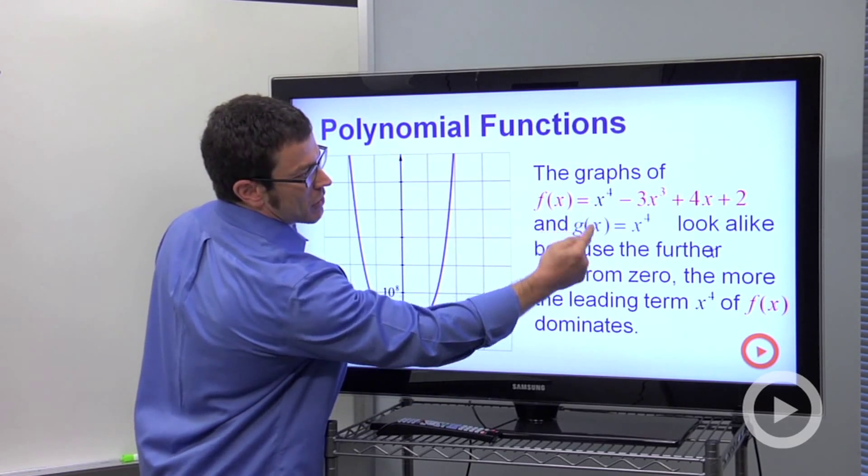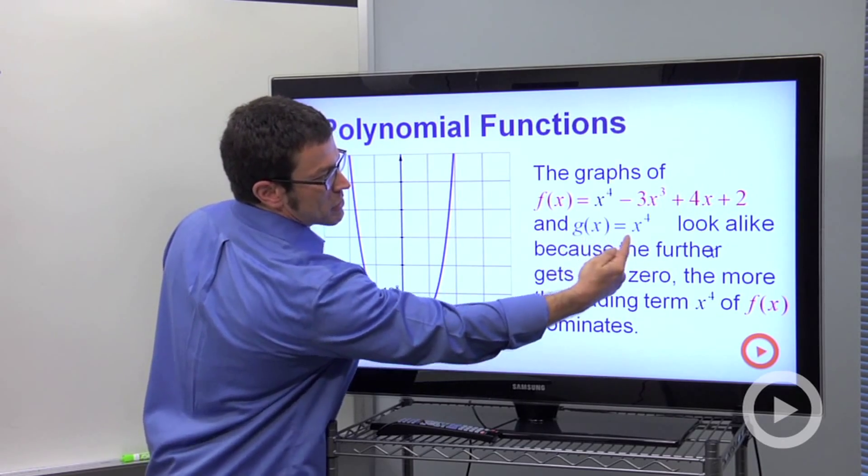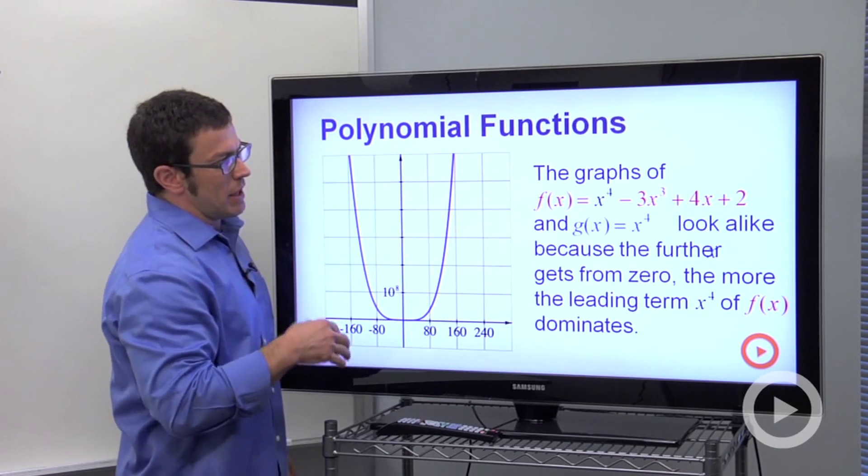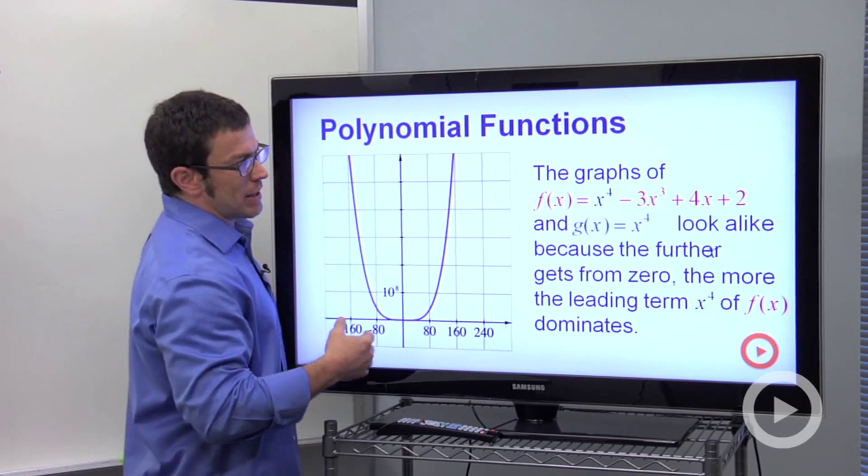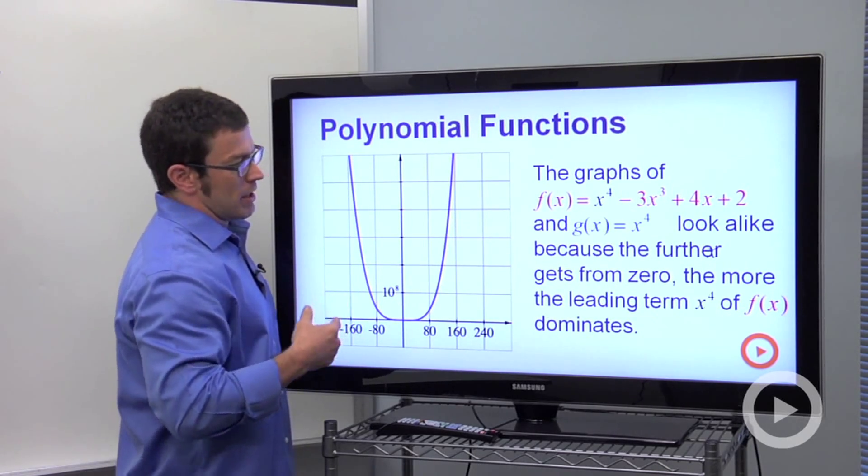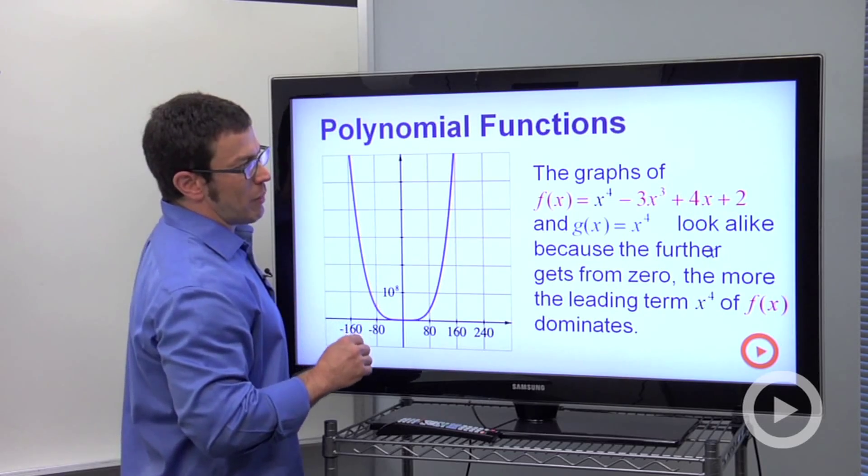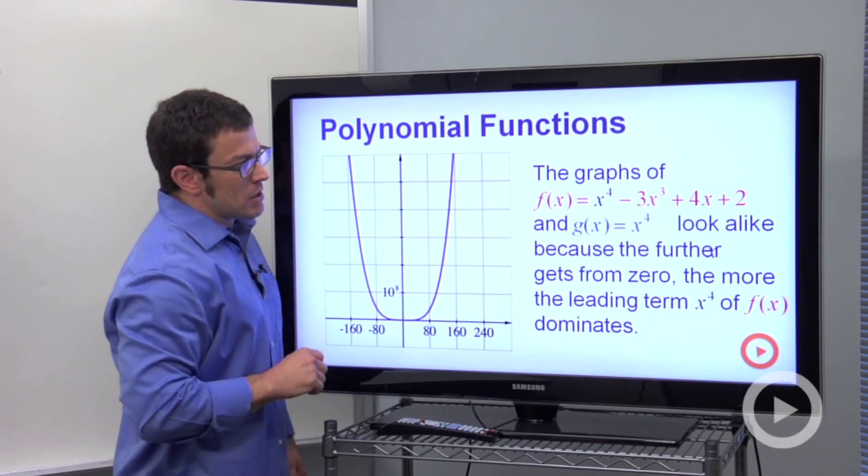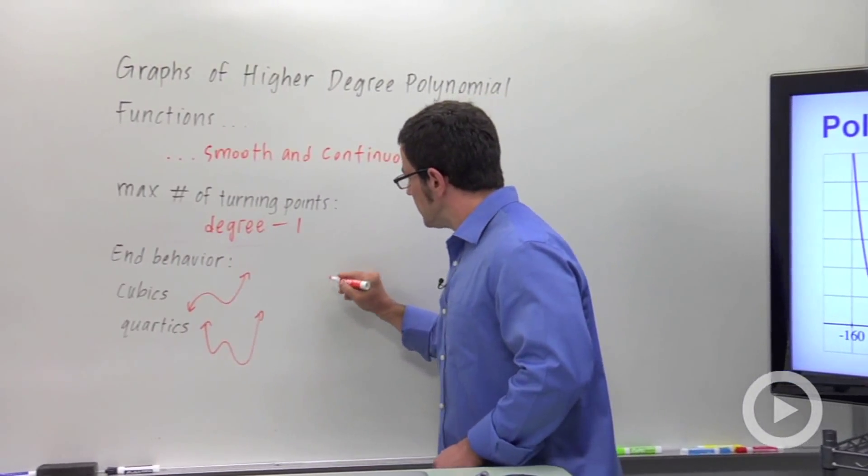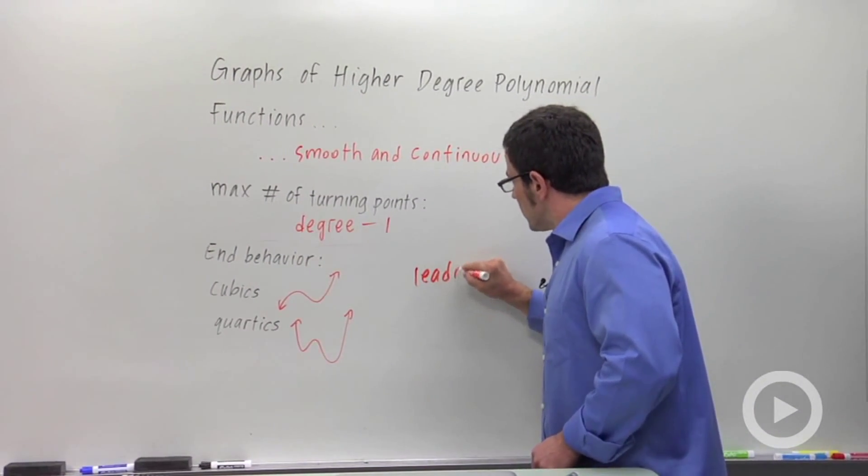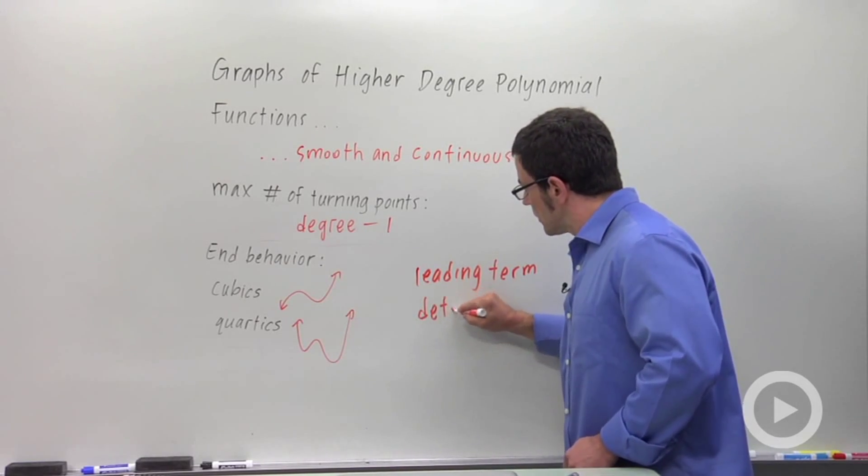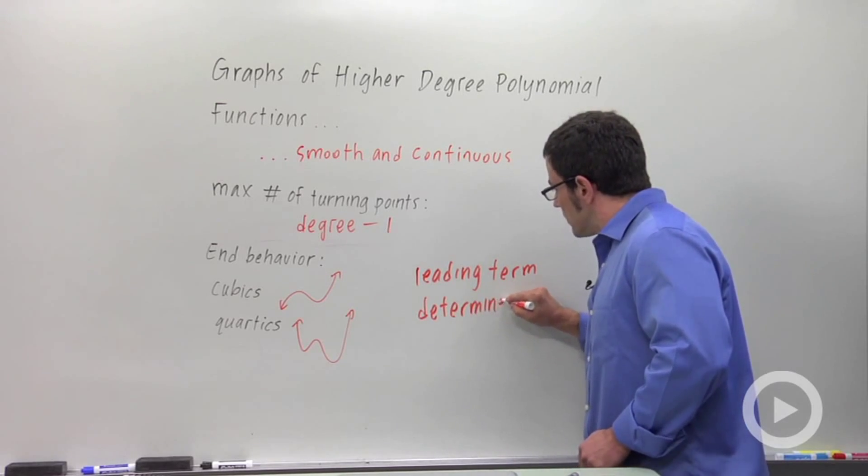So this tells us that the determining factor in the end behavior of a polynomial function is the leading term. Notice that the leading term, that's exactly what we have function here, graphed here in blue. The leading term is a power function. It's the power function with the highest degree. That's going to determine your end behavior completely. Both ends will go up, or both ends will go down, or everything is determined by the leading term and its coefficient. So that's one more thing I want to write down here. Leading term determines end behavior. Really important.